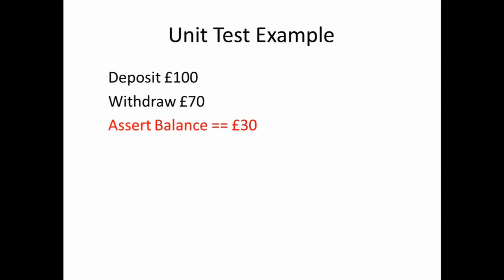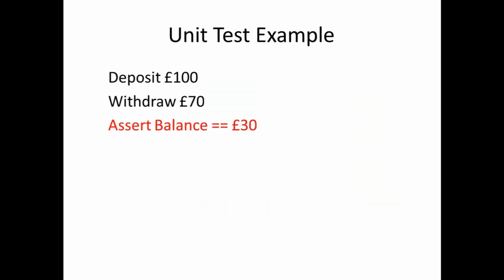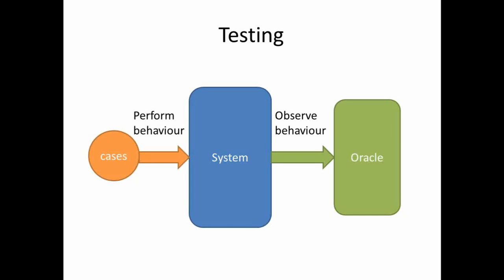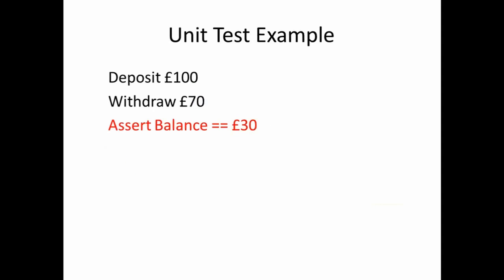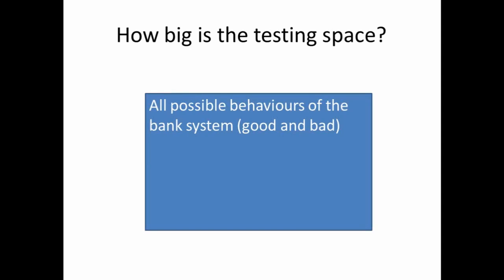You have some actions and the assertion. We might have one test case for checking that the balance is correctly updated, and one test to check that the balance never goes below zero — if you try to withdraw more than you have, you throw an exception. The question is: is this enough? To answer whether testing is problematic, we have to consider how big this space of testing is — how many behaviors does a system have, and what fraction of that are we actually testing?